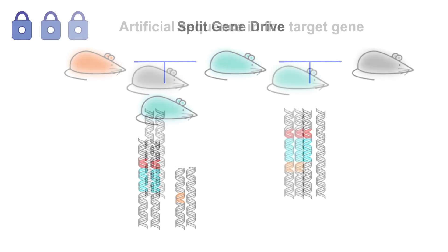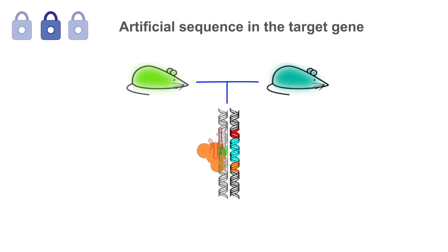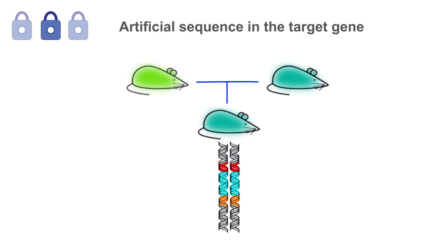The second safeguard is to insert an artificial sequence in the target gene of the laboratory organism. The gene drive is then constructed using guide RNAs that direct Cas9 to cut only the artificial sequence, so it only works in the engineered laboratory organism but not the wild population.